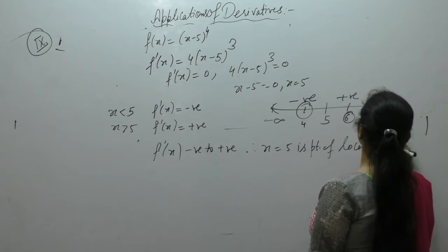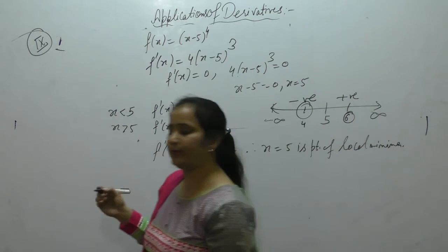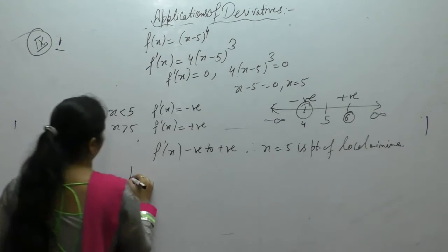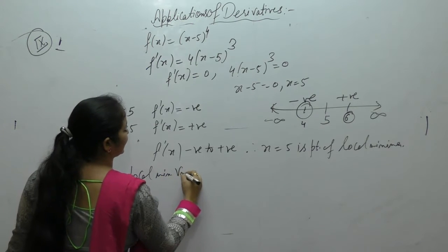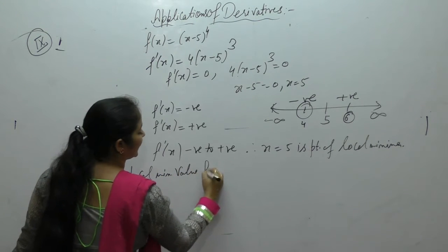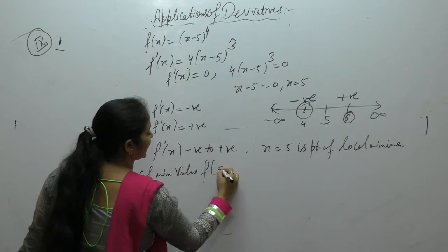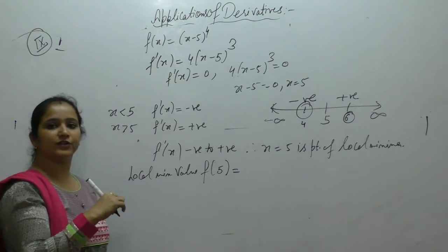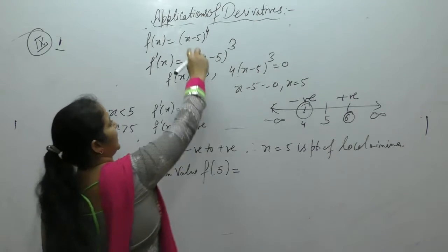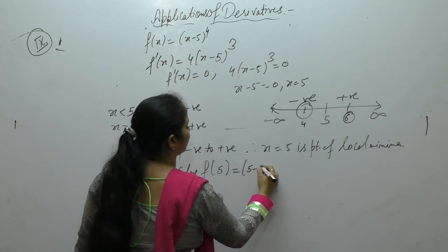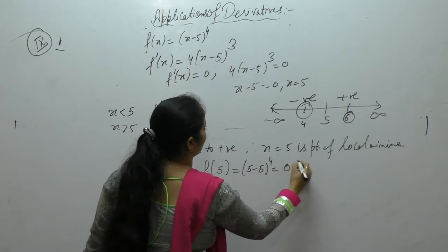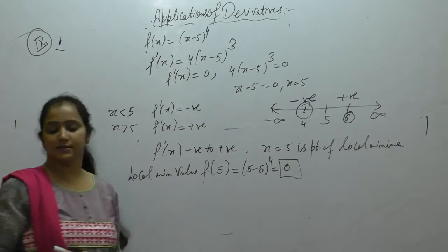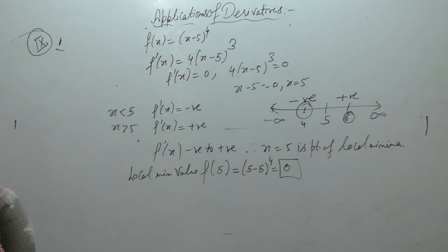If we also need to find the local minimum value, we put the point x = 5 into the given function: (5-5)⁴ = 0. So the local minimum value is 0.